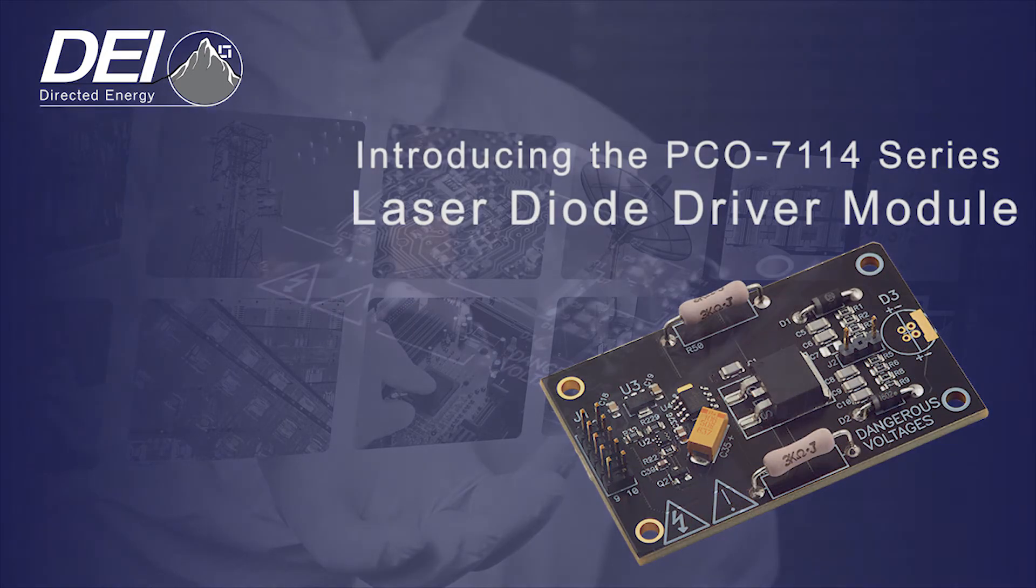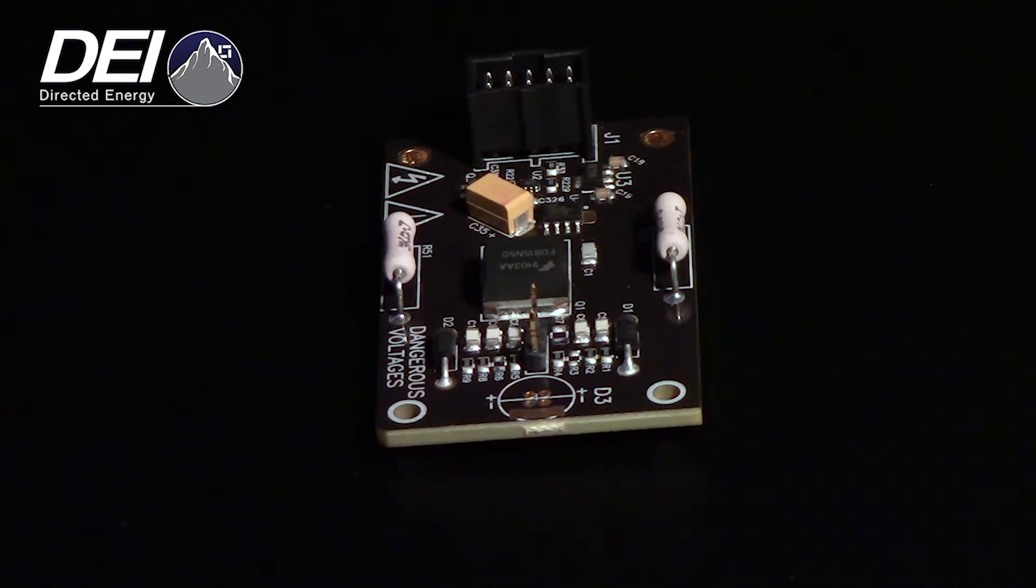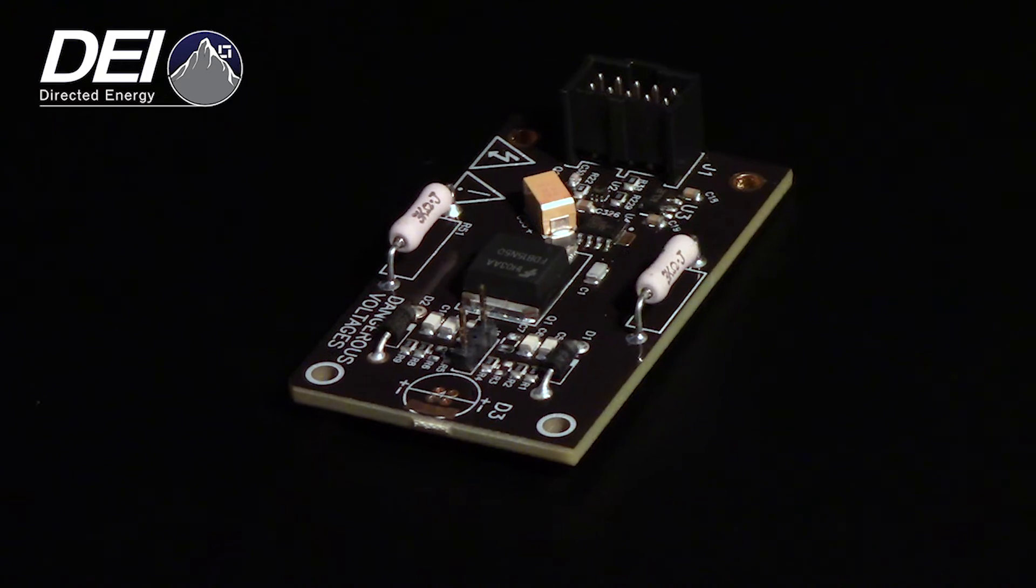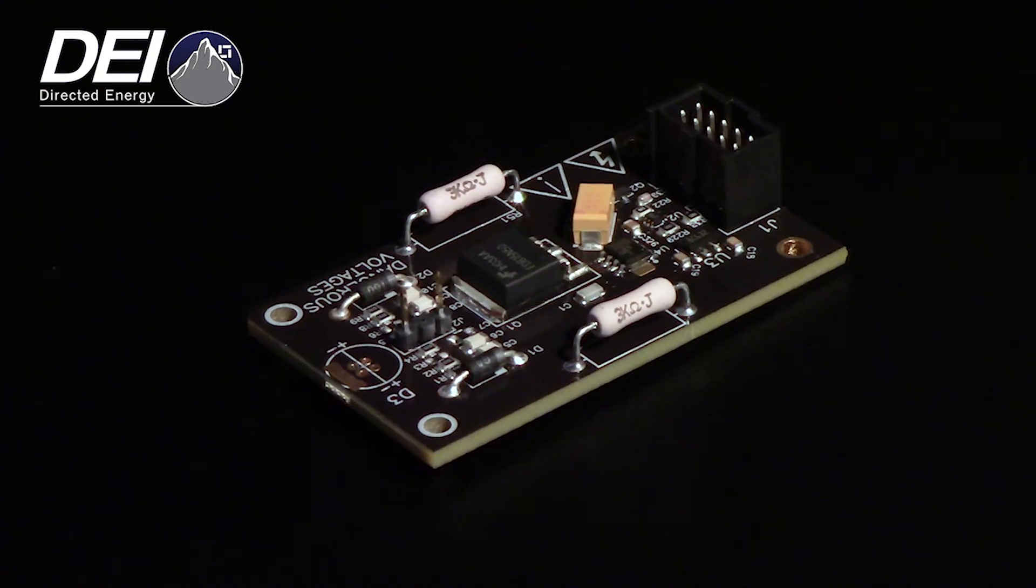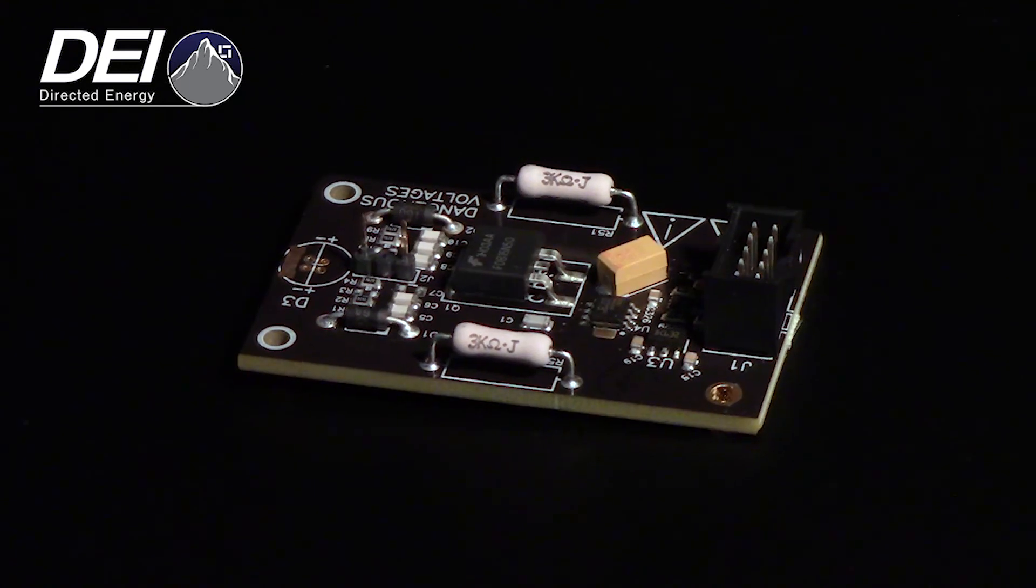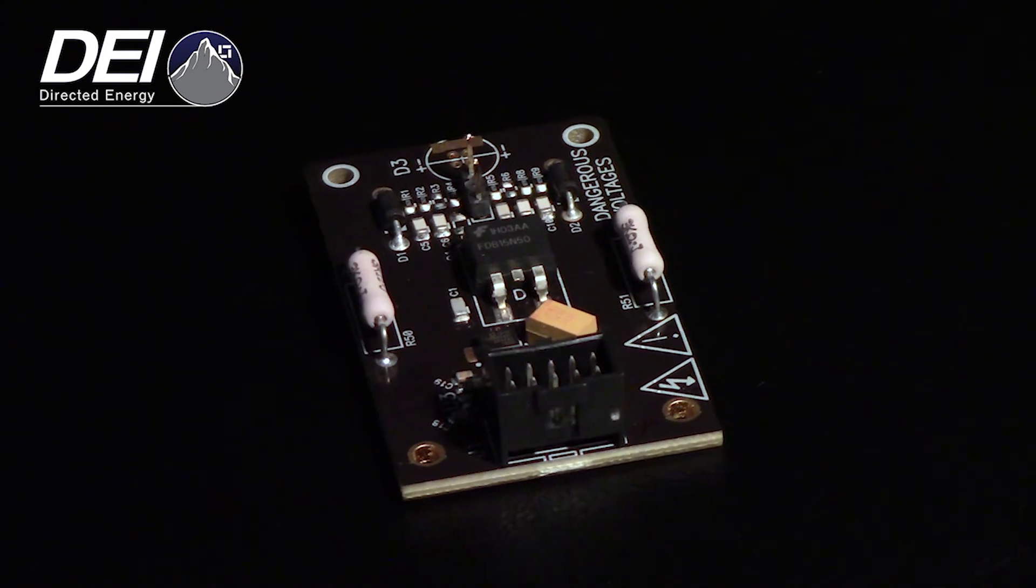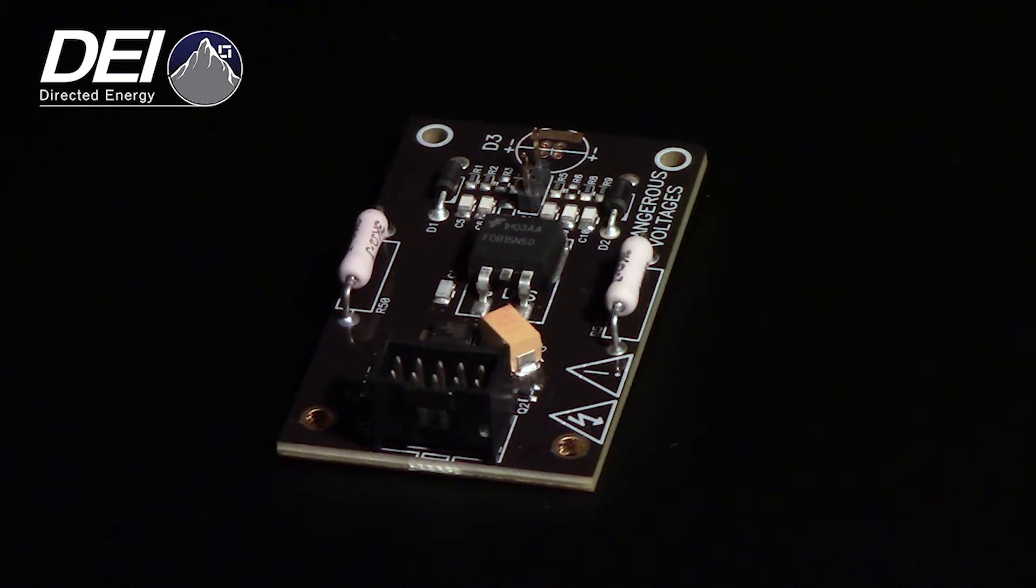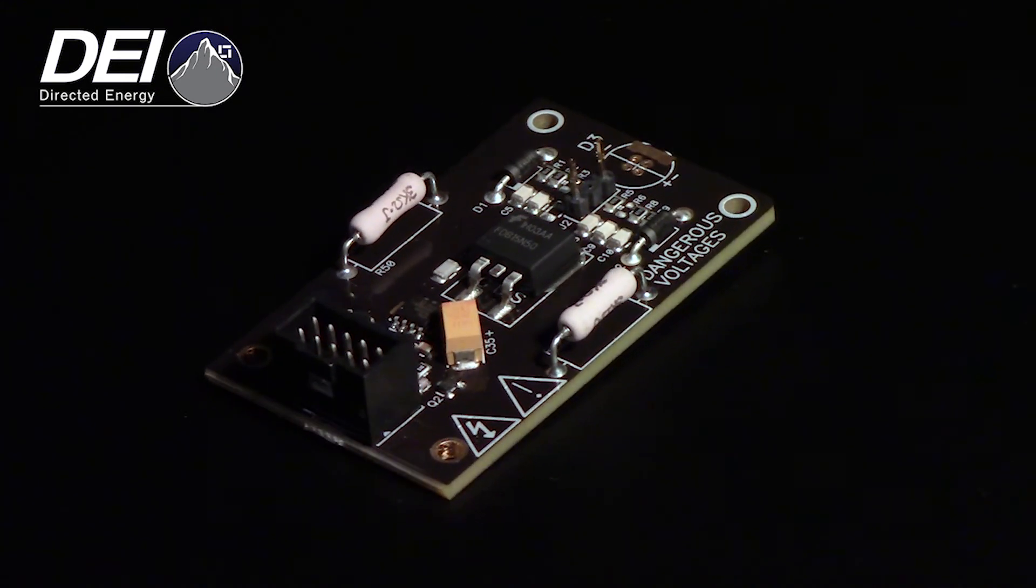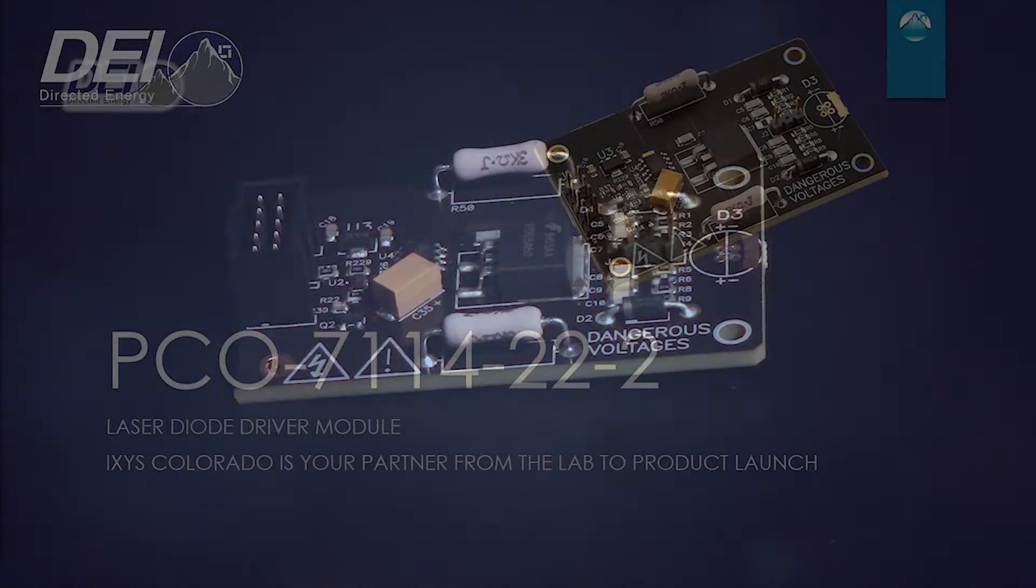The PCO7114 is a series of laser diode driver modules that provides from 6 amps to 50 amps of pulsed current at frequencies over 1 MHz. With configurations covering a wide range of operating conditions, this versatile module is ideal for extremely fast, high-current, pulsed laser applications, including ADAS, LIDAR, range finding, and research for both OEM designs and single end use.